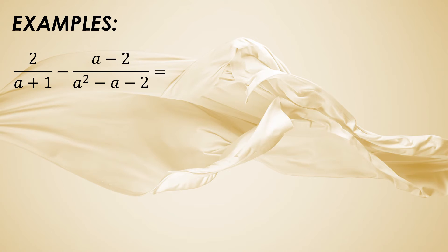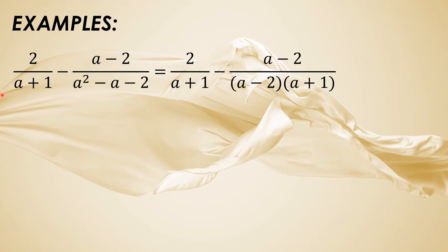Last example: 2 over (a plus 1) minus (a minus 2) over (a squared minus a minus 2). We don't have the same denominator here, but we need first to find the factors of a squared minus a minus 2 since it is factorable. So let us copy 2 over (a plus 1), and then minus, copy the numerator (a minus 2). The factors of a squared minus a minus 2 are (a minus 2) and (a plus 1).